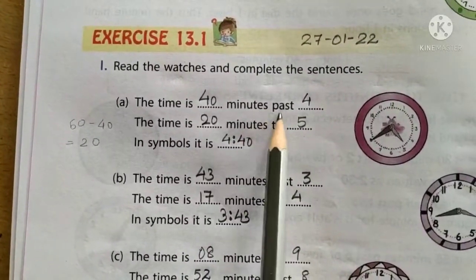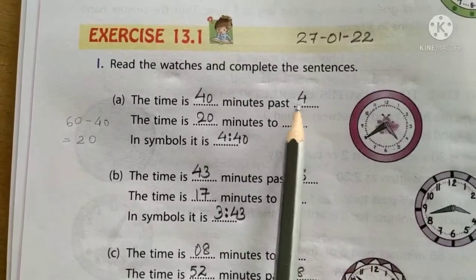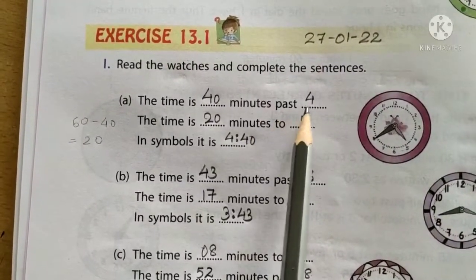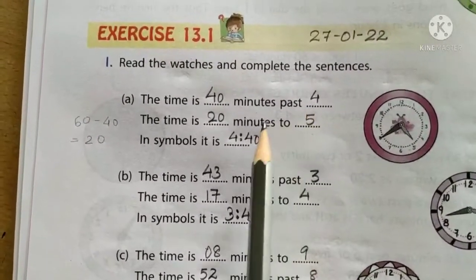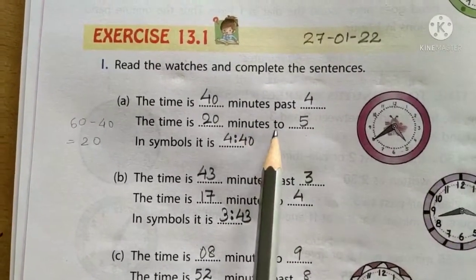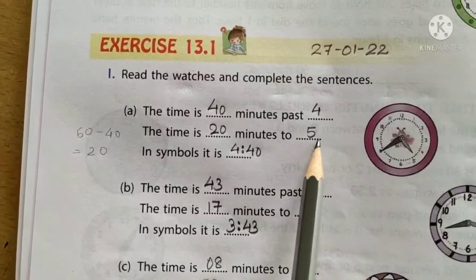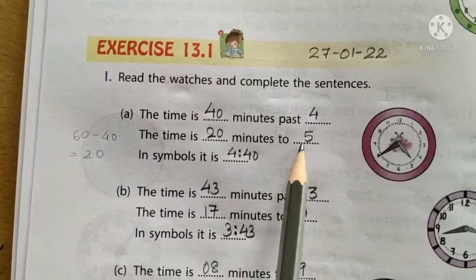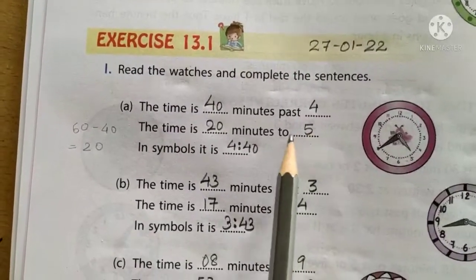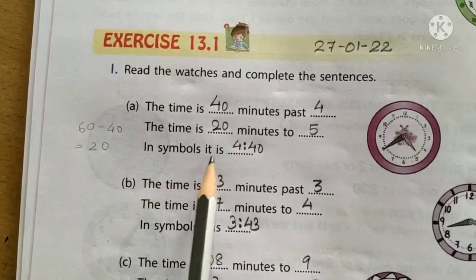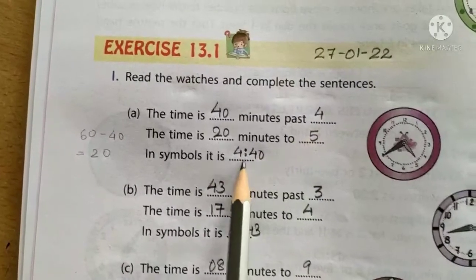When we write minutes past, then we write the current hour. When we write minutes past, the hour is running, it will be written. But when it is minutes to, then we write the upcoming hour. In minutes to, we write that hour that will be later. In symbols, it is written as 4 colon 40.